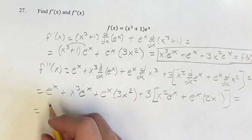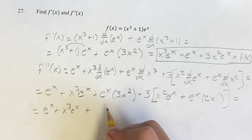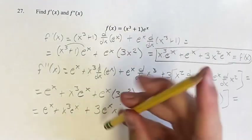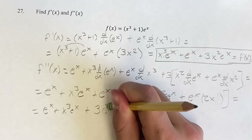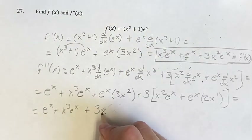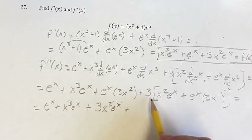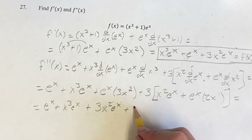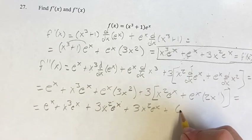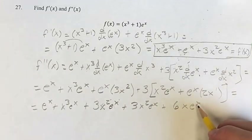So, one last time, we get e to the x plus x cubed e to the x plus 3 e to the x times x squared. Actually, I'll write x squared first since in this one we wrote the x before the e to the x. So we'll do x squared e to the x plus 3 x squared e to the x plus 3 times 2 is 6 x e to the x, since x to the first power is just x.